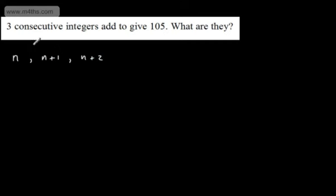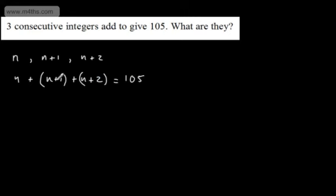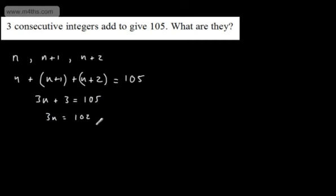If we've got n, the next one is n plus 1, and the next is n plus 2. Alternatively, you could choose the middle number to be n, the one before to be n minus 1, and the one after to be n plus 1. So what we've got is n plus (n plus 1) plus (n plus 2) equals 105. That gives us 3n plus 3 equals 105. Subtracting 3 from both sides gives 3n equals 102, so n equals 34.